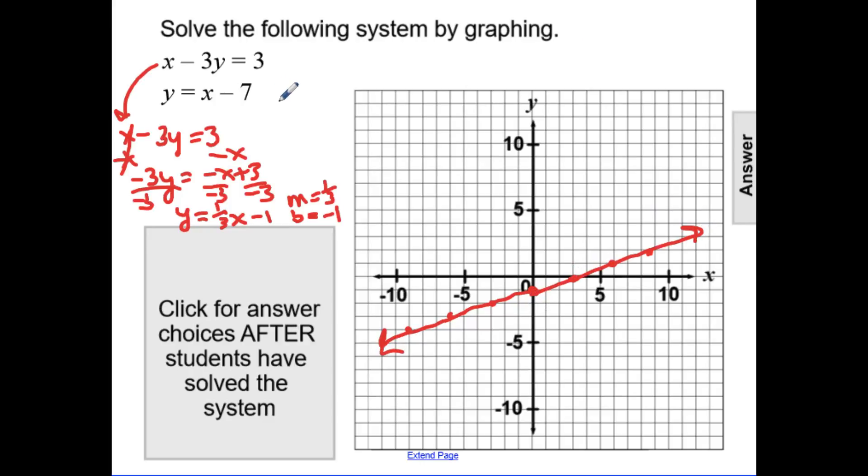The second equation, y equals x minus 7, is already in slope-intercept form since y is by itself. We can see the slope is 1, and the y-intercept is negative 7.